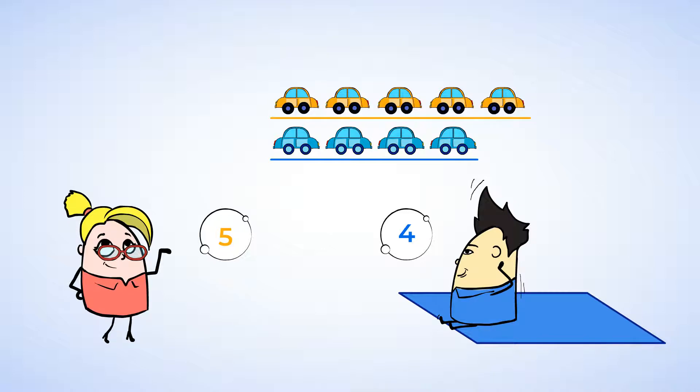And now that we've lined up all the cars, don't forget why we did it. We wanted to know, does Jenny have more or fewer cars than Chen? Well, let's check together. Is Jenny's line of cars longer or shorter? Jenny's line of cars is longer. So she has more cars than Chen.